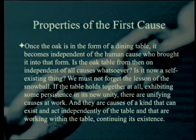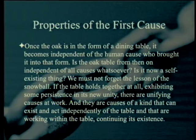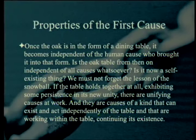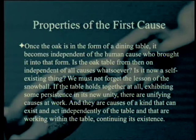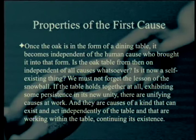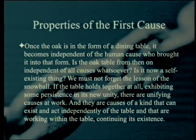Once the oak is in the form of a dining table, it becomes independent of the human cause who brought it into that form. But is the oak table from then on independent of all causes whatsoever? We must not forget the lesson of the snowball. If the table holds together at all, exhibiting some persistence in its new unity, there are unifying causes at work — maybe screws, nails, pegs, or design flanges. These are causes of a kind that can exist and act independently of the table, yet are working within the table, continuing its existence.